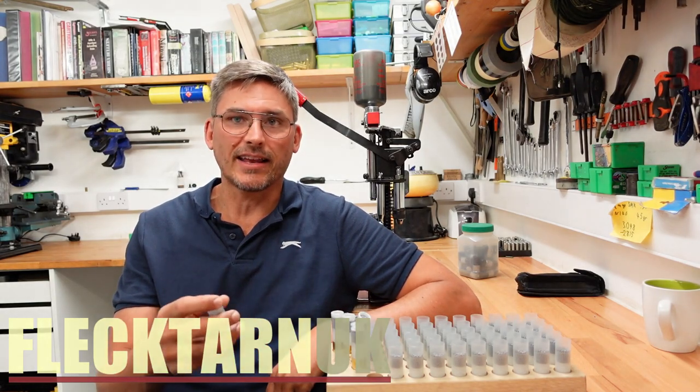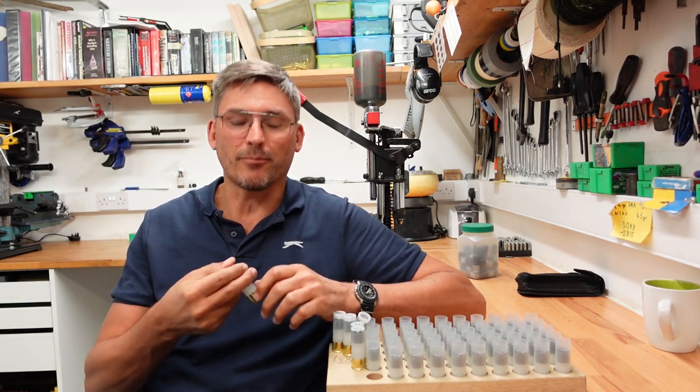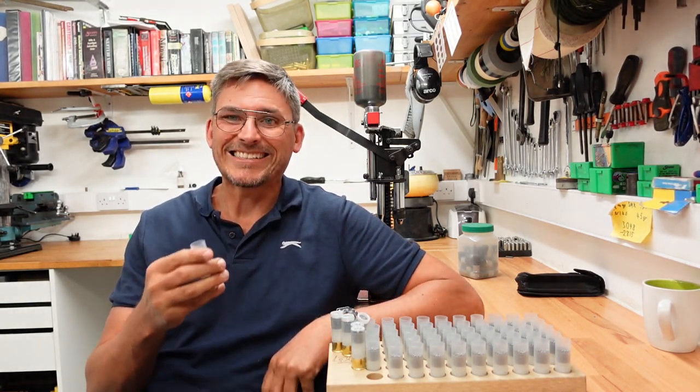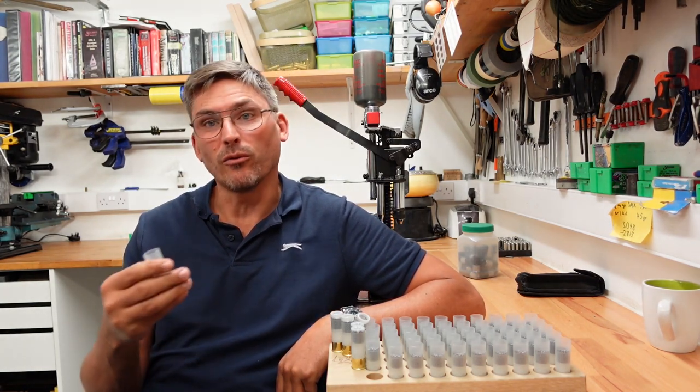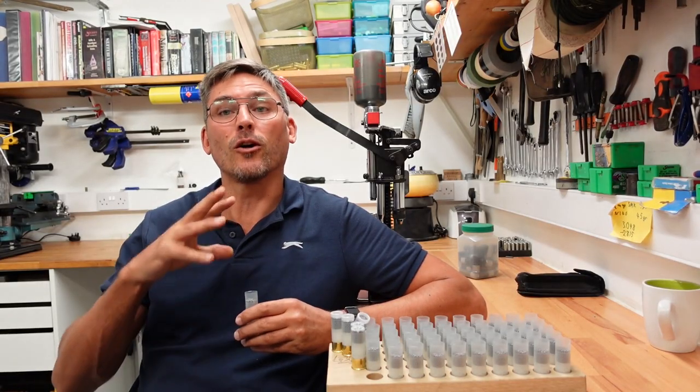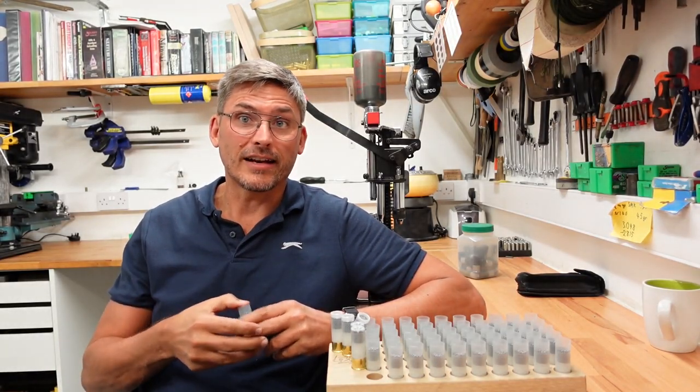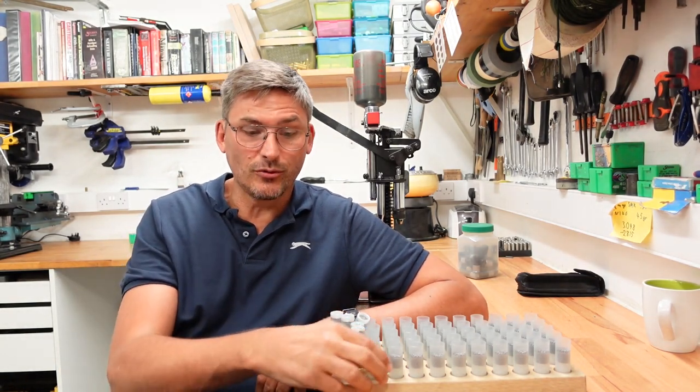Your shot shell consists basically of the outer part which is the hull. At the bottom of the hull we have a primer, and then inside the hull goes the powder. Over the powder goes your wad, over the wad goes whatever you want to shoot out of it, in this case shot. Then you need something to hold the whole lot together so it doesn't just fall apart. We have an option of two there.